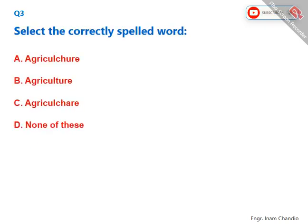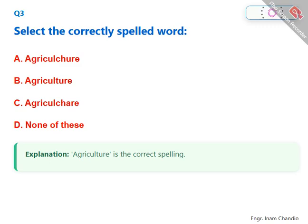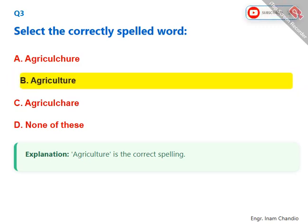Select the correctly spelled word. Agriculture is the correct spelling. The correct answer is B. Agriculture.